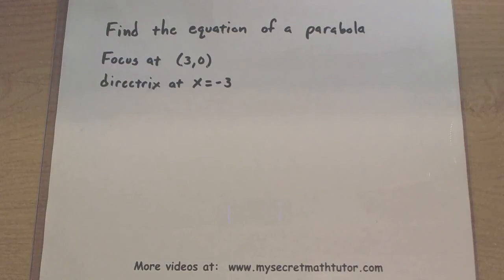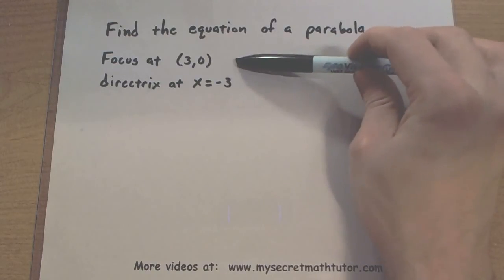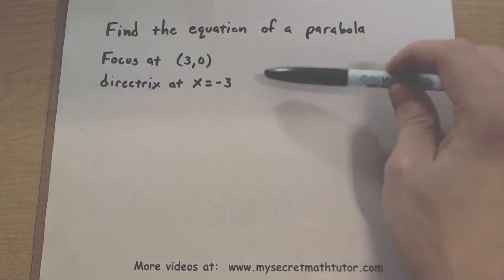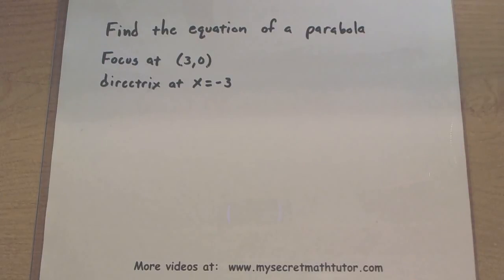Welcome to My Secret Math Tutor. I'm going to show you how you can find the equation of a parabola. We're given two pieces of information. We know that the focus is at 3, 0, and that it has a directrix at x equals negative 3.